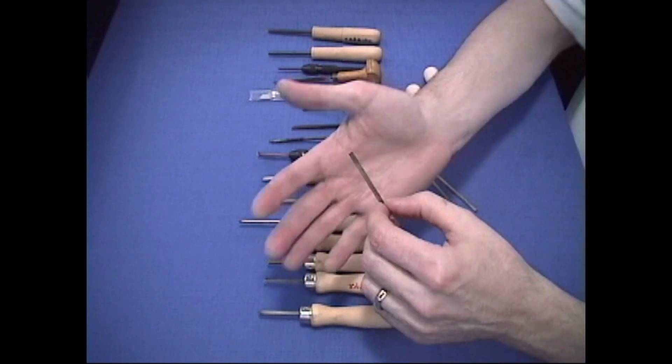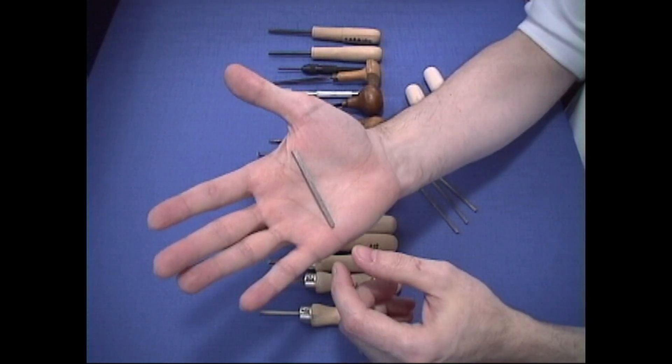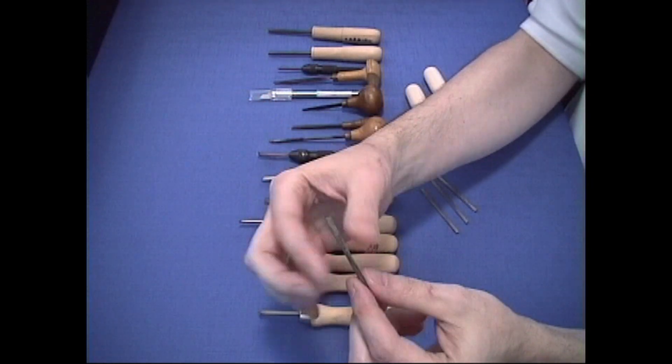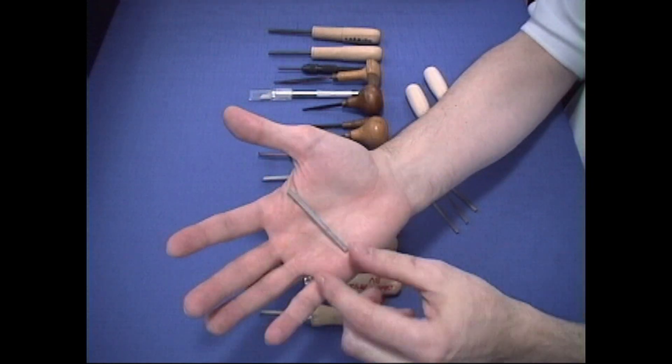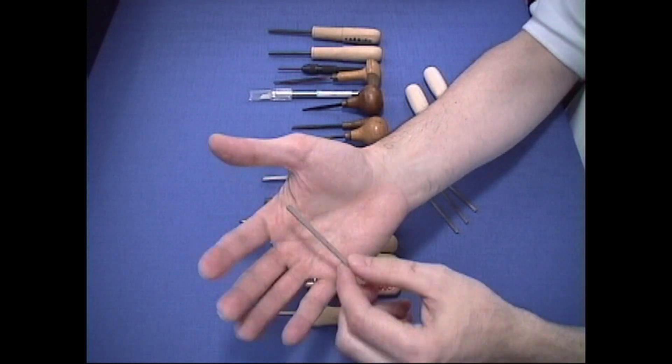Now let's look at these gravers. This graver is a typical tool graver that you would buy and it's about an eighth of an inch in the width and the length is about two and a half inches. This is what they call high speed steel, but we'll talk more about that in a minute.